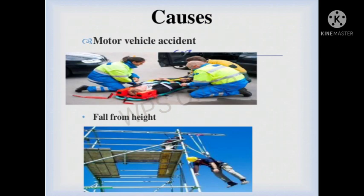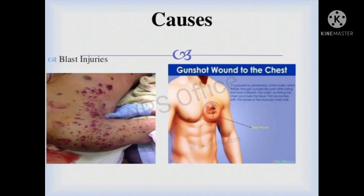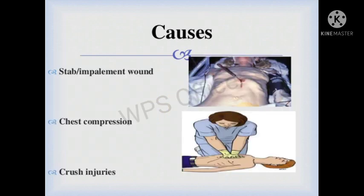The major causes of chest injuries are motor vehicle accident, fall from a height, blast injury, gunshot wound to the chest, stab or impalement wound — when the patient is stabbed by a pointed object or knife. Also chest compression and crush injuries — when CPR is performed for a very long time, the patient's chest or ribs might be crushed. That is known as crush injuries.